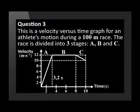This is a velocity versus time graph for an athlete's motion during a 100-meter race. The race is divided into three stages: A, B, and C.